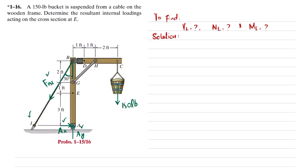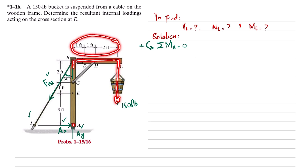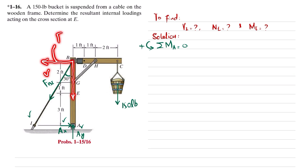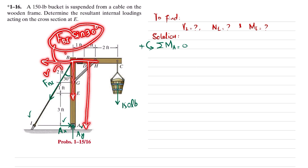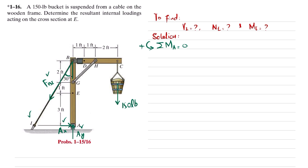The first equilibrium condition: sum of all moments about point A equals zero, taking counterclockwise as positive. About point A, one moment is the 150-pound force with a perpendicular distance of four feet. The second moment involves FBy, which has two components. The x-component is FBi times sin 30 degrees, multiplied by a perpendicular distance of six feet. The 150-pound force produces a clockwise moment, so it is negative.